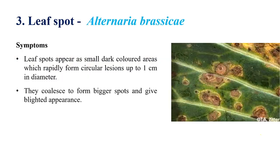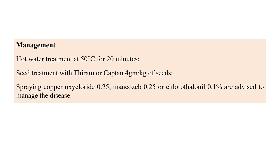Leaf spot is caused by Alternaria brassicae. The most important diagnostic feature of Alternaria is the presence of concentric rings on leaves. Symptoms start as small dark brown spots that coalesce and enlarge into big circular spots up to 1–3 cm in diameter. Concentric rings are the most diagnostic characteristic symptom of any Alternaria disease.